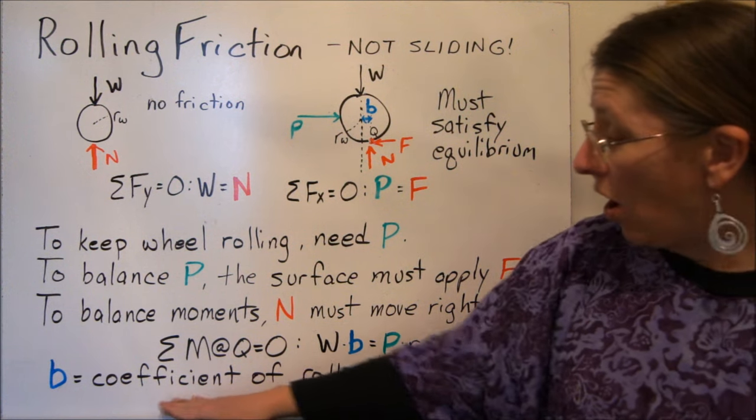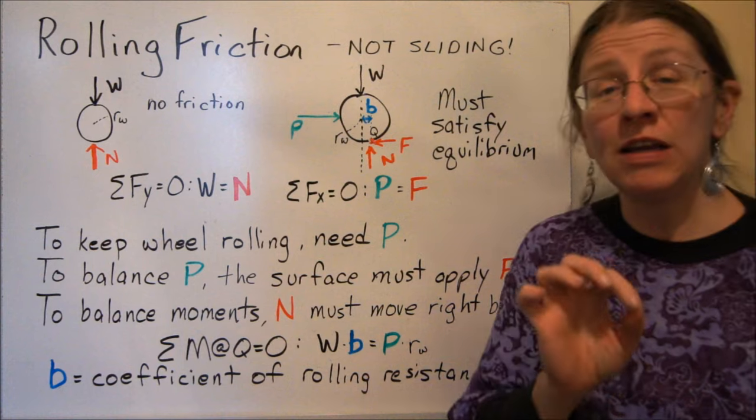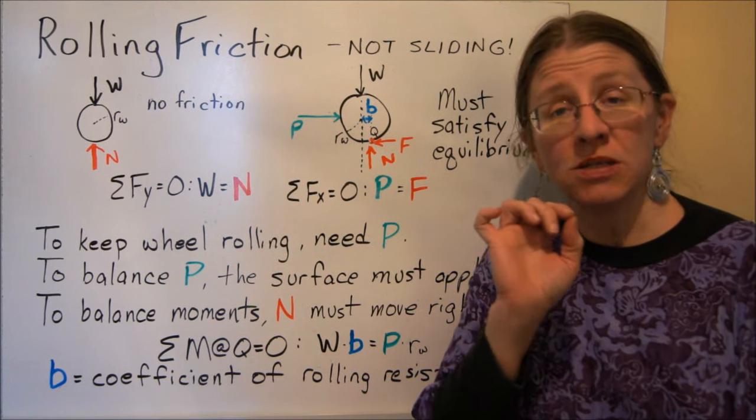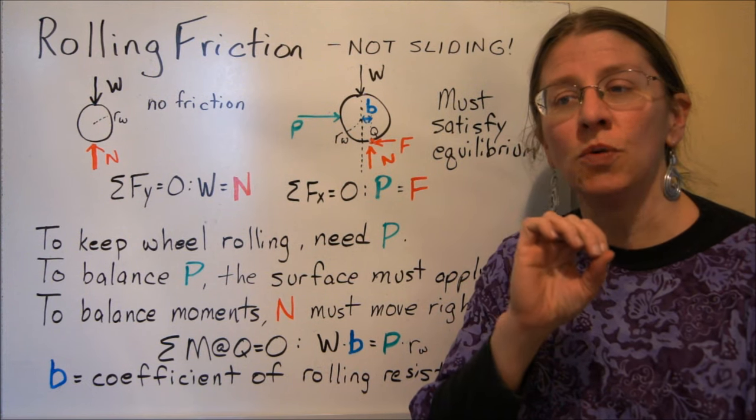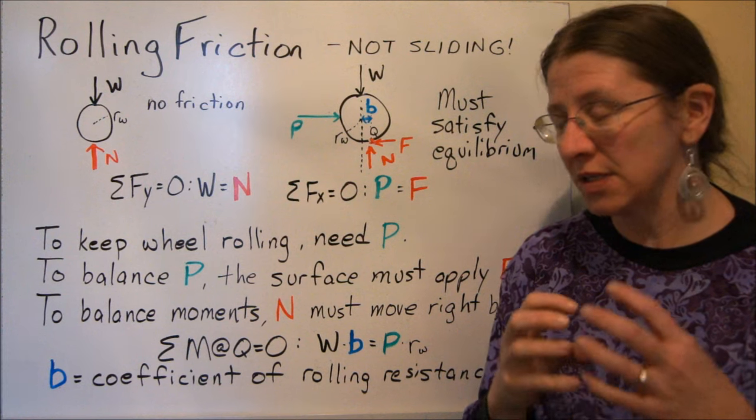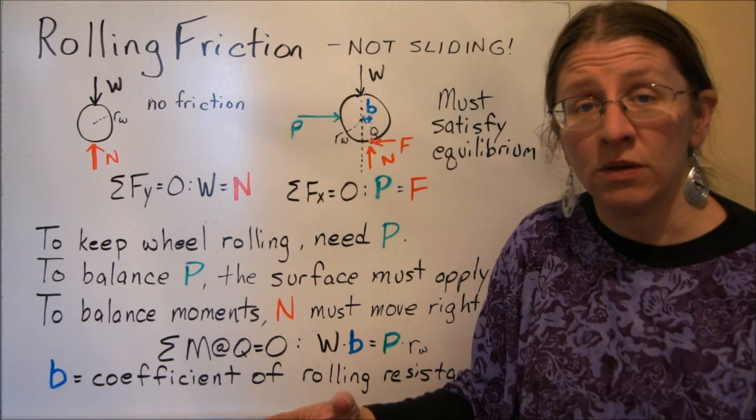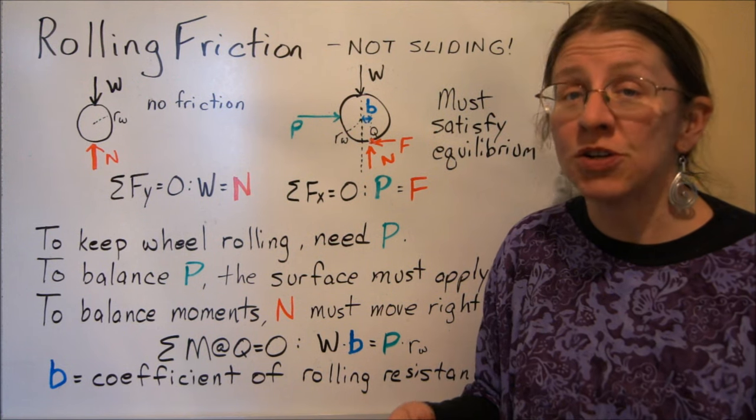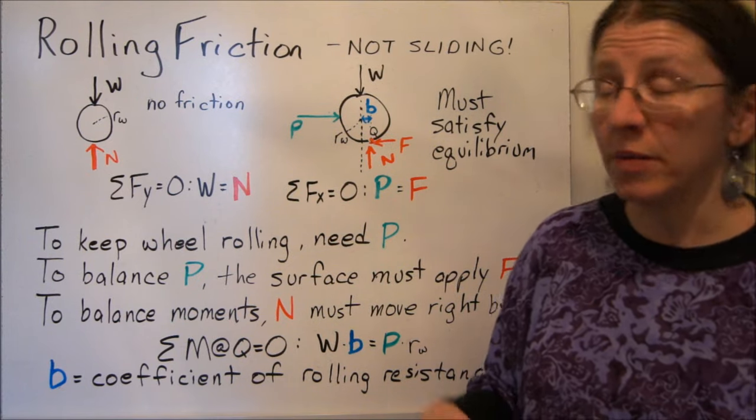Now we call this B the coefficient of rolling resistance. It's kind of a funny coefficient because it actually has units of length. So it's not a unitless coefficient. Now there are some people who like to call the coefficient of rolling resistance actually B divided by Rw, the radius of the wheel, so that you have a non-dimensional coefficient. So if you're going to look these up in the table, make sure you understand what you're getting, whether you're actually getting B or B divided by Rw.